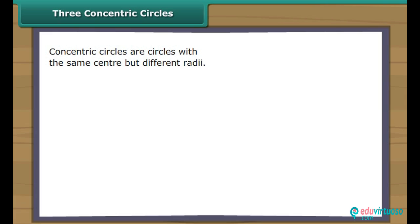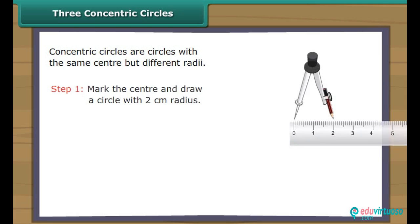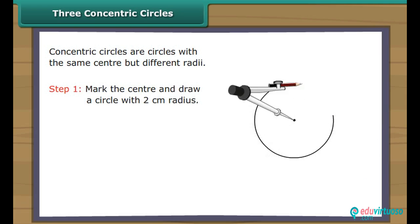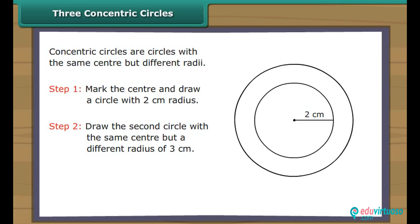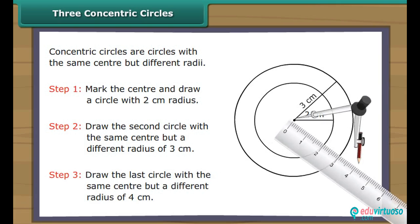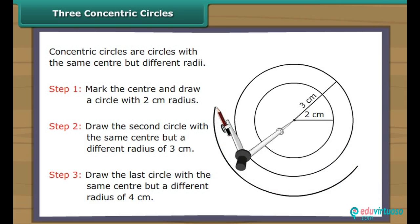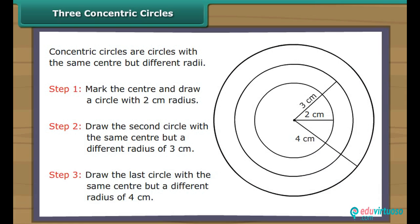Three concentric circles. Concentric circles are circles with the same centre but different radii. Let us now draw three concentric circles with the radii two, three and four. Mark the centre and draw a circle with two centimetres radius. Draw the second circle with the same centre but a different radius of three centimetres. Draw the last circle again with the same centre but a different radius of four centimetres. We have three concentric circles.